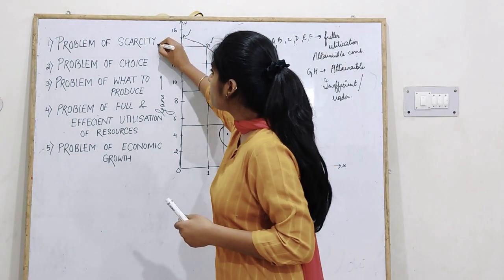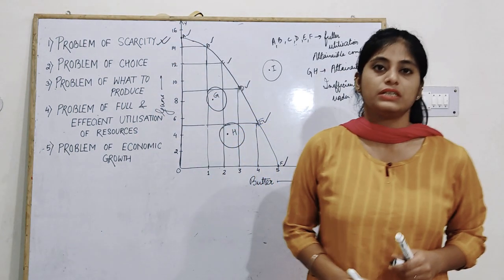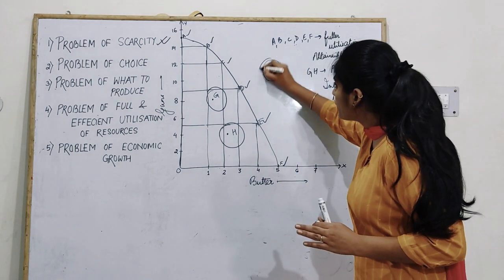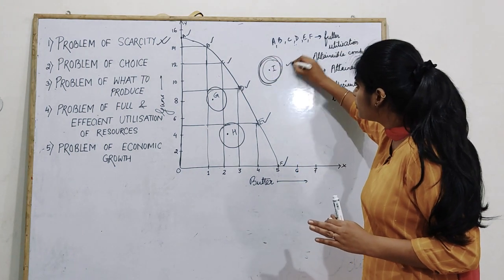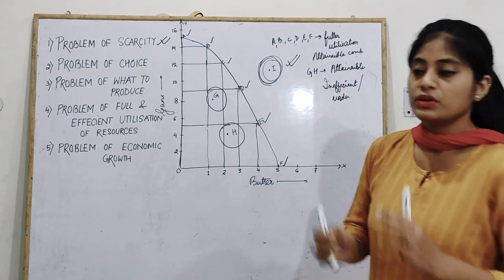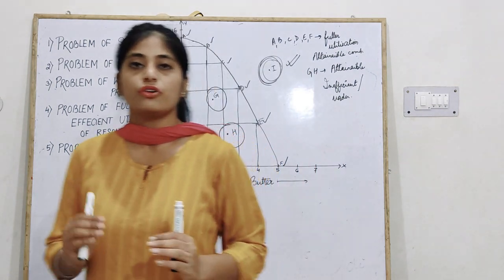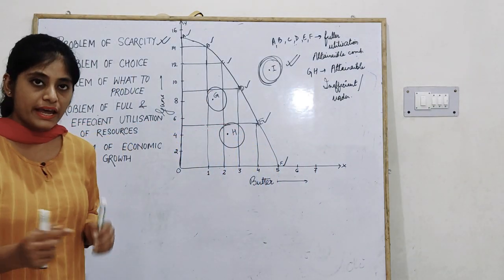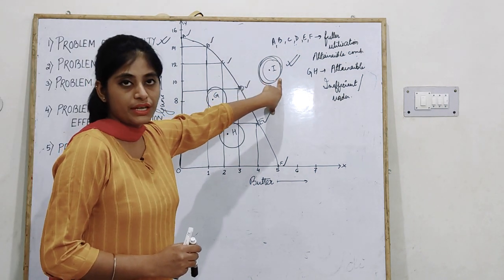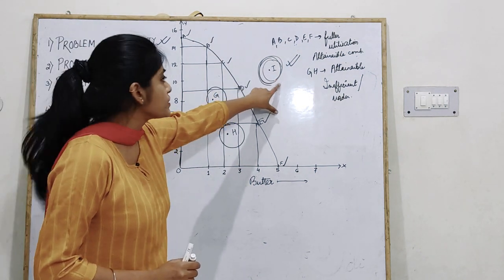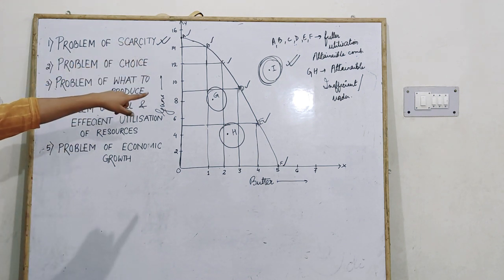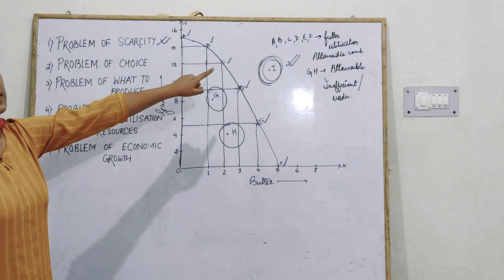Now let's study some problems with the help of this PPC curve. The first problem is the problem of scarcity. Point I denotes the problem of scarcity — your resources are limited and scarce, and you cannot attain this combination. That is why it is called the problem of scarcity.